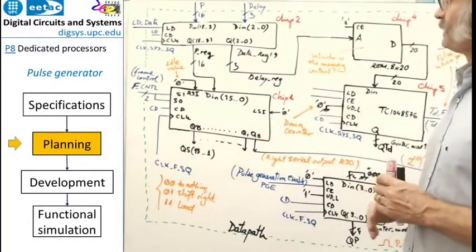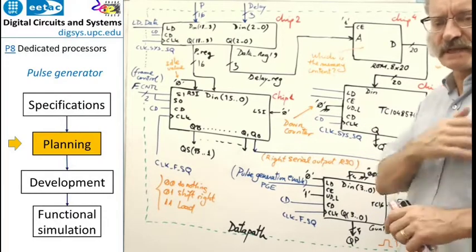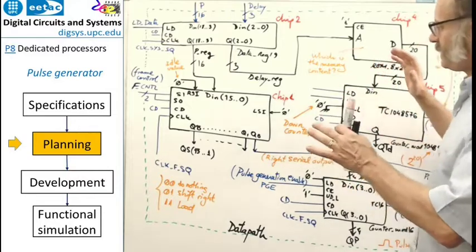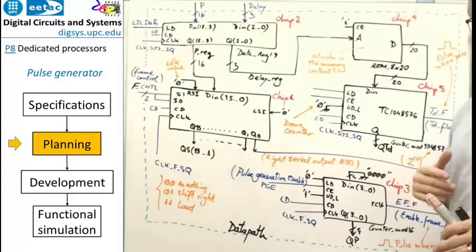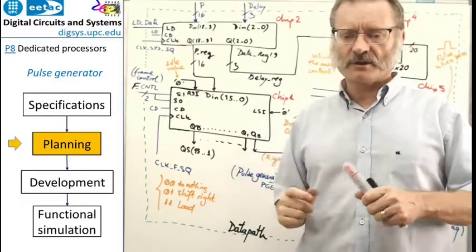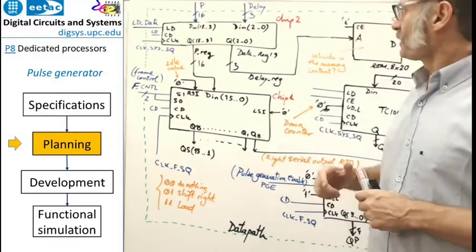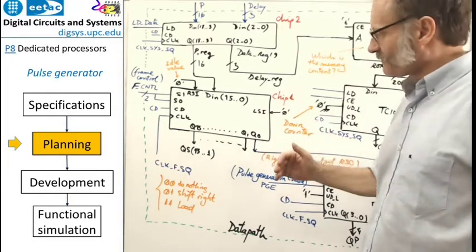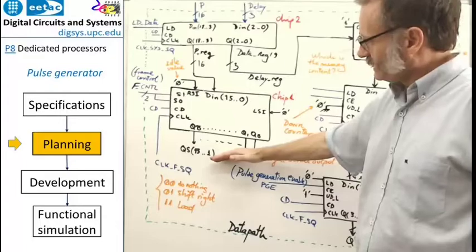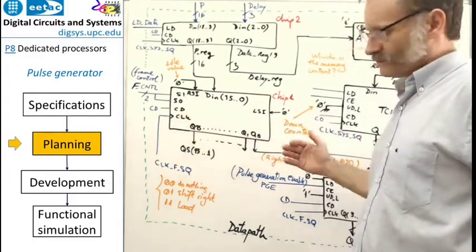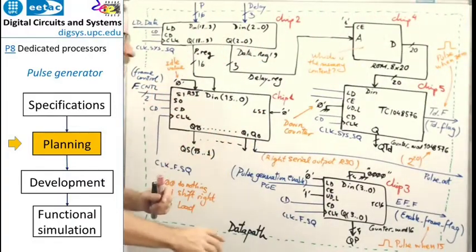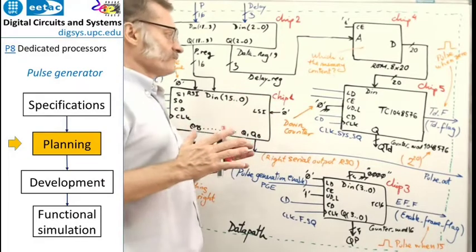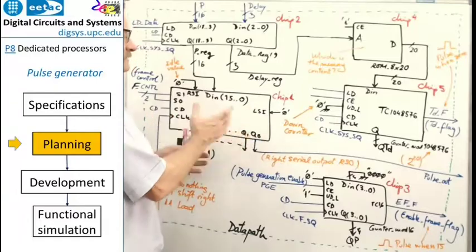Here is a picture of the data path. Let's start commenting on some details to make this picture easier to understand. One thing is a picture like this, which can be designed using several sheets of paper. The most important chip here is chip one, which is the shift register. The idea is to load the pulses and then push the bits to the right, shifting them bit by bit, so the frame is generated and the serial output becomes the data out.